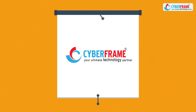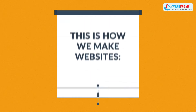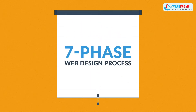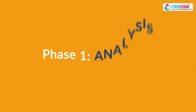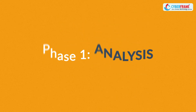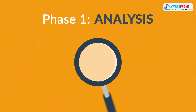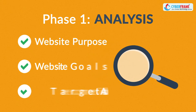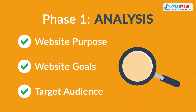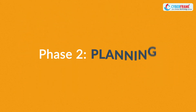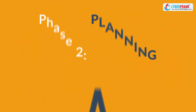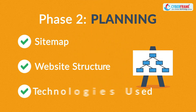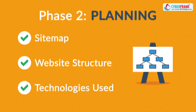What you have to do is look for someone serious about web design — and that's where we come in. This is how we make websites, by following this seven-phase web design process. Phase one: Analysis. The first step is always about information gathering, identifying things like the website purpose, goals, and target audience. Phase two: Planning. A plan includes a definition of the site map, structure, and technologies that we're about to use.